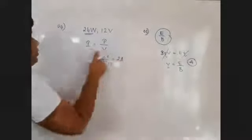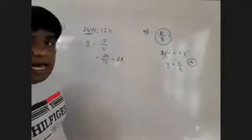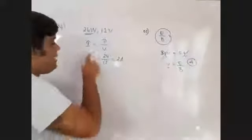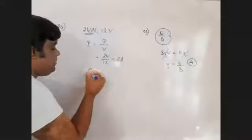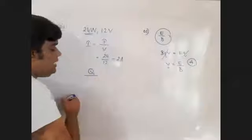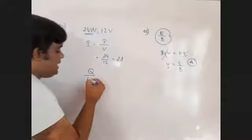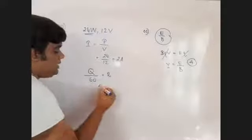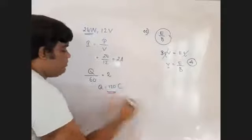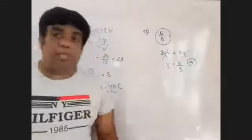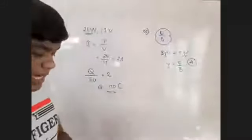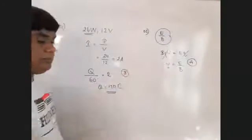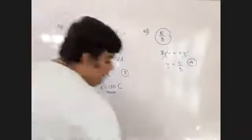So with 2 ampere current for 60 seconds, Q equals I times t, which equals 120 coulombs. That's the third answer. Right.